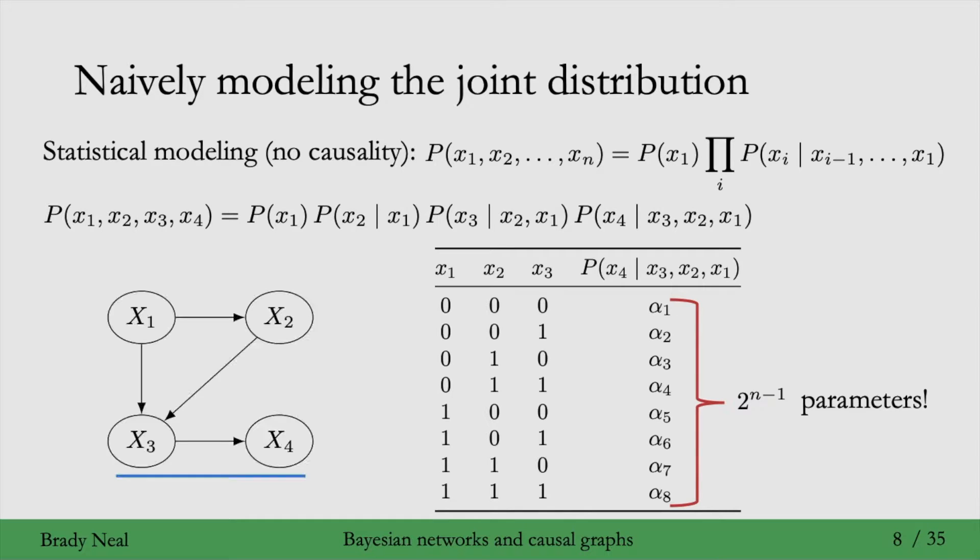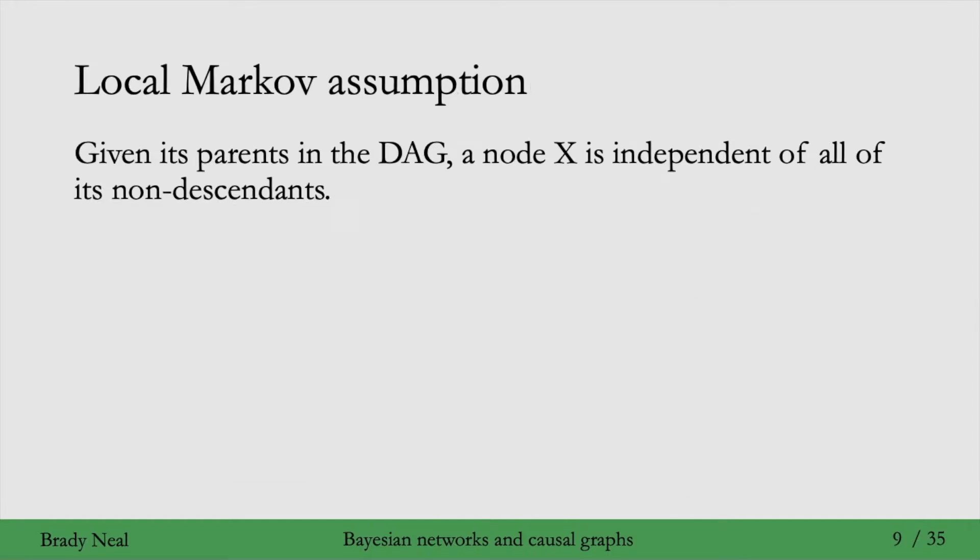And this is because we're modeling the dependence of x4 on every other variable in the distribution. This is where Bayesian networks come into play. Okay, if I were to draw a graph for which variables each variable depends on, then I could get something more local like this. So here, x4 only depends on x3. So maybe we don't need to model the dependence of x4 on all of the variables, but just on x3.